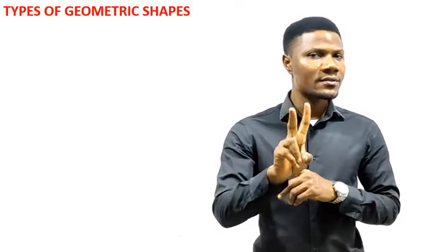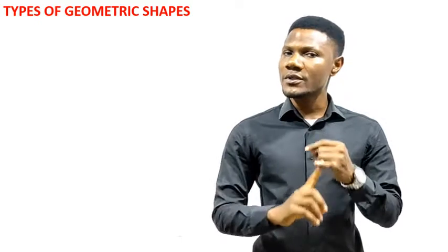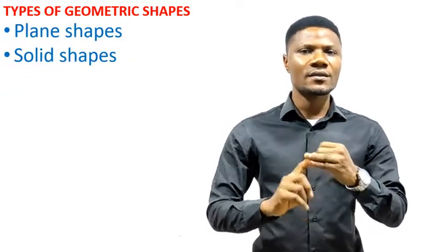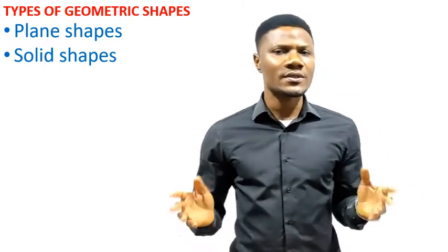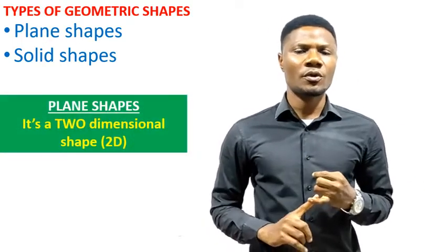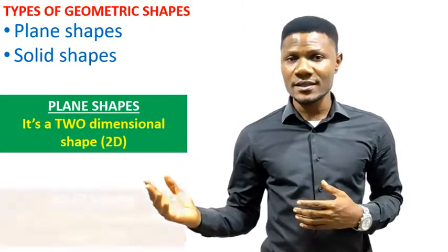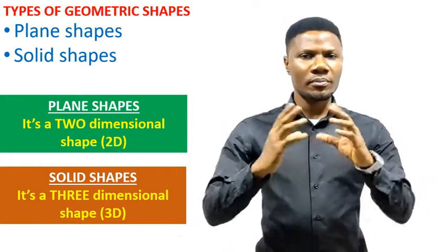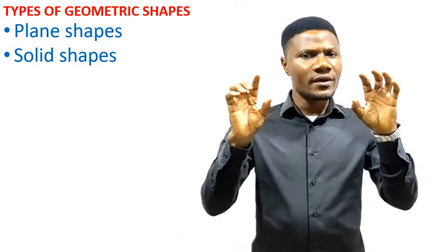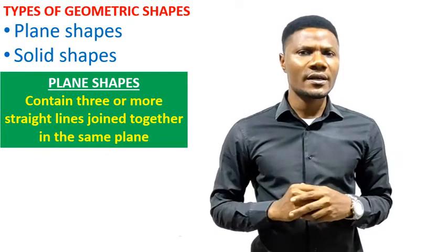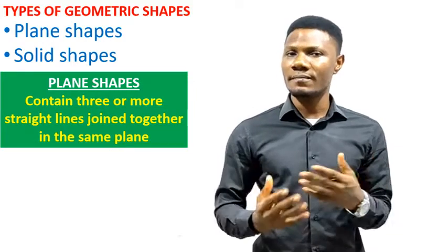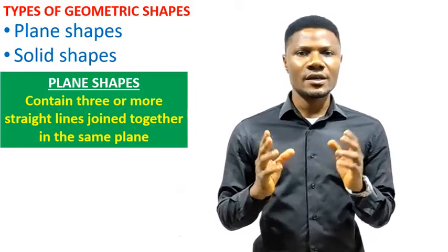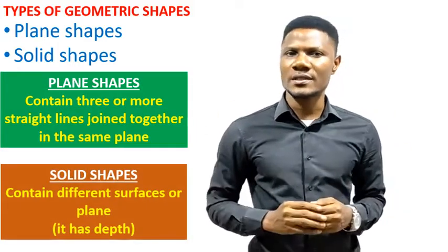Since Mensuration deals with geometric shapes, what are the types of shapes we are considering? There are two types of shapes to be considered. The first is a plain shape and the second is a solid shape. A plain shape is a two-dimensional shape, or a 2D shape, while the solid shape is a 3D shape. Plain shapes contain three or more straight lines joined together in the same plane, while solid shapes contain different surfaces and they have depth.